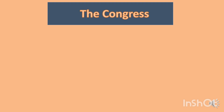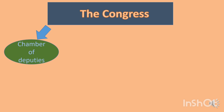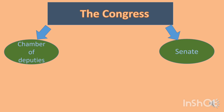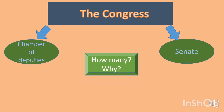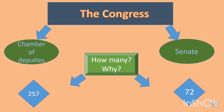What about the Congress at the national level? The Congress is composed of the Chamber of Deputies and the Senate. How many deputies and senators are there, and why? There are 257 national deputies in Argentina. And in the Senate, there are just 72 senators.